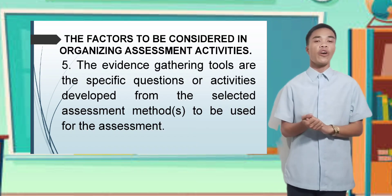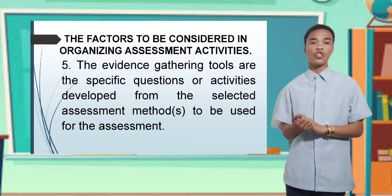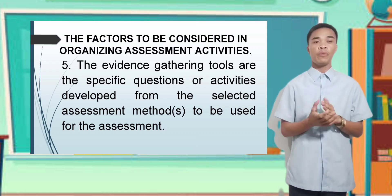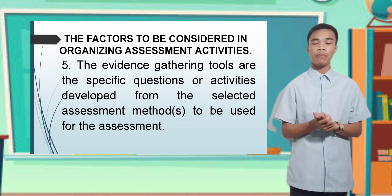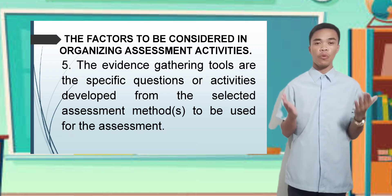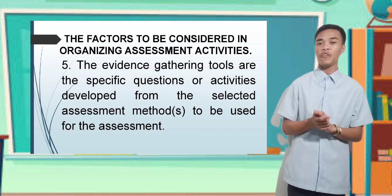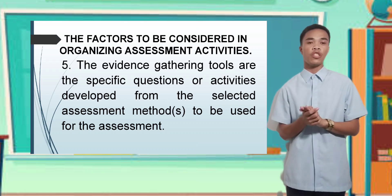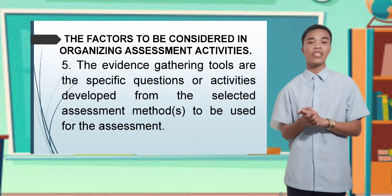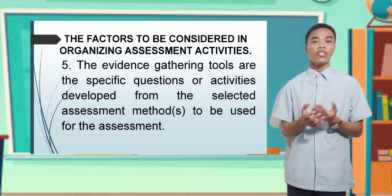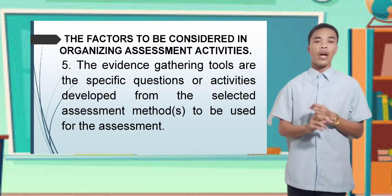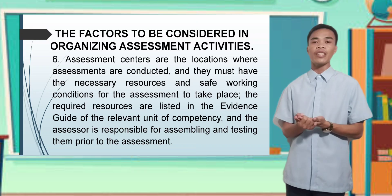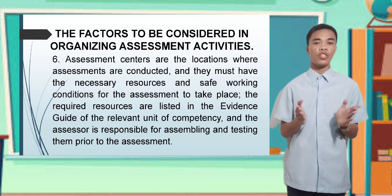The fifth factor is evidence gathering tools — these are the specific questions or activities developed from the selected assessment methods to be used for the assessment. Evidence gathering tools are the specific tools or methods used by assessors to collect evidence of a student's competency, such as questions, projects, or observations.